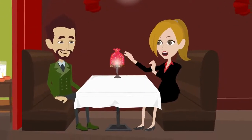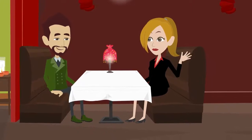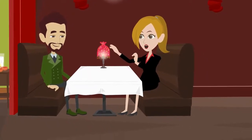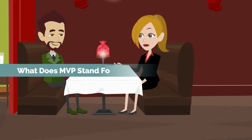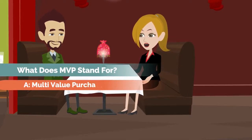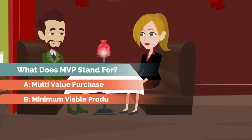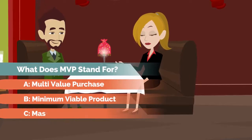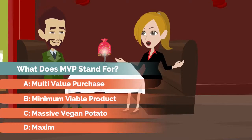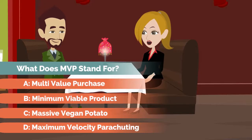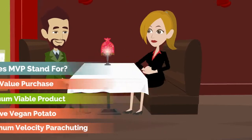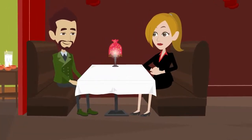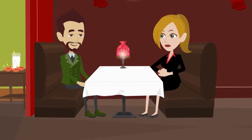Hey Liam, I've come up with some questions about product. Do you want to give them a try? Sure. Question 1: What does MVP stand for? A: Multi-value purchase. B: Minimum viable product. C: Massive vegan potato. D: Maximum velocity parachuting. It's B — minimum viable product, right? Correct. While massive potatoes sound fun, it's definitely minimum viable product.